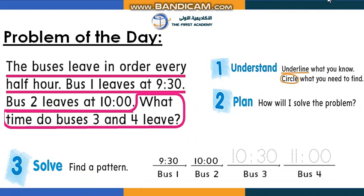What we are going to do is read the problem and try to understand it. When I say understand, it means you are going to underline what you know and circle what you need to find. This is our first step. Now let's read the question together.